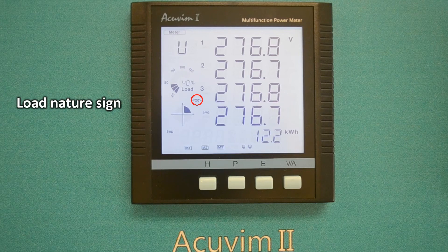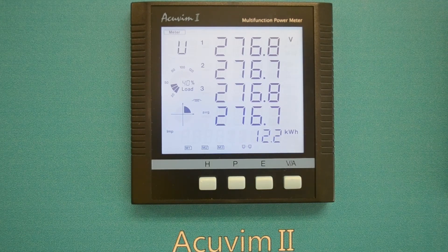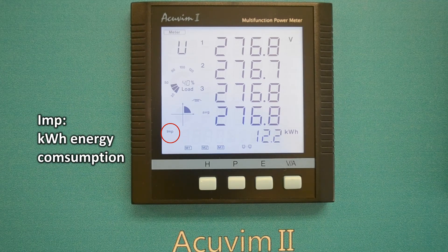The load nature icon indicates if the load is inductive. The IMP icon shows the kilowatt hour energy consumption.